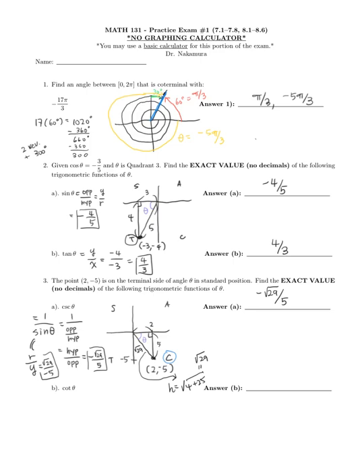Cotangent is 1/tangent, or x/y using coordinates. x = 2, y = −5, so cotangent = −2/5. Using the triangle: in quadrant 4, tangent is negative, adjacent is 2, opposite is 5, giving the same answer of −2/5.